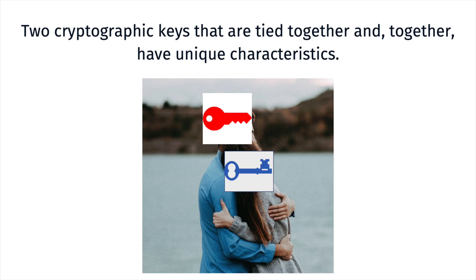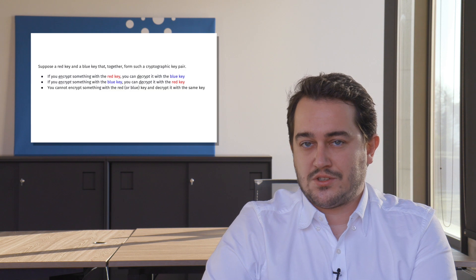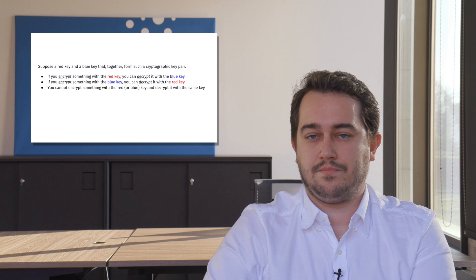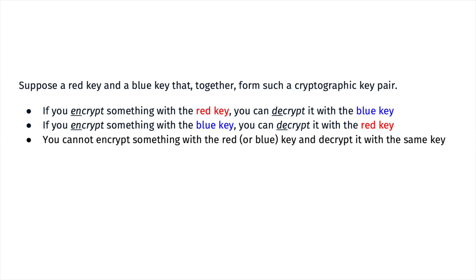Next, let's take a look at key pairs. Key pairs are two cryptographic keys that are tied together and together have unique characteristics. Suppose there is a red key and a blue key that together form such a cryptographic key pair. If you encrypt something with a red key, you can decrypt it with a blue key. If you encrypt something with a blue key, then you can decrypt it with a red key. You cannot encrypt something with a red or blue key and decrypt it with the same key.